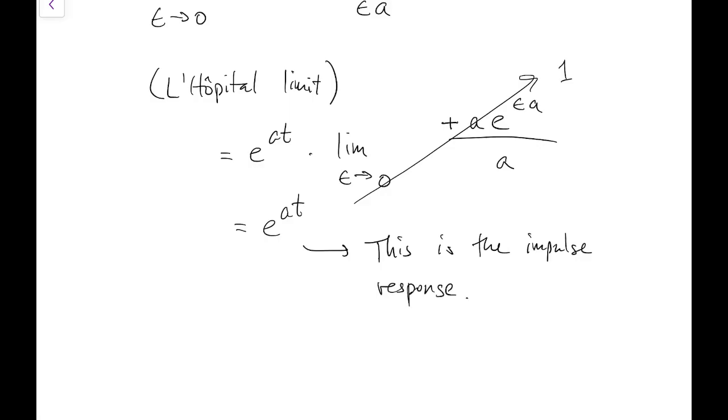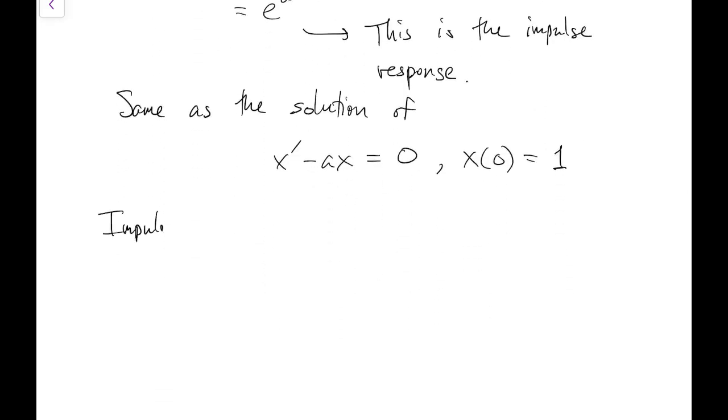But hold on. That function is also the solution to the unforced version if we had an initial value of 1 instead of 0. So the impulse response with zero initial value is the same as kicking the initial value up from 0 to 1 instantly and then going on as though there's no forcing.